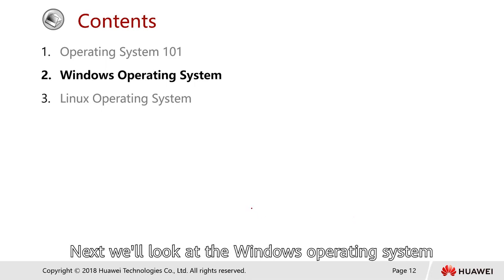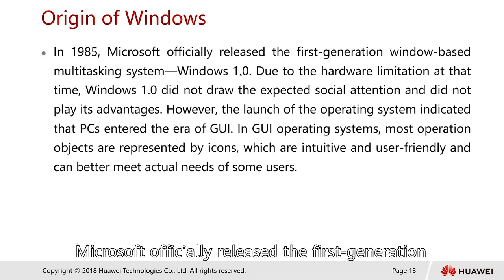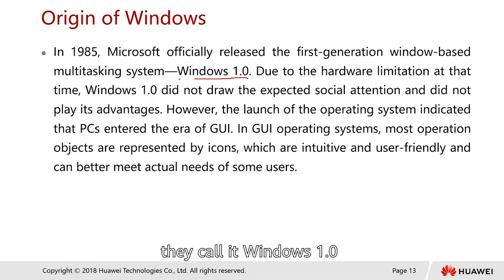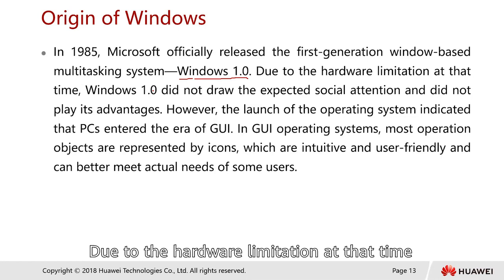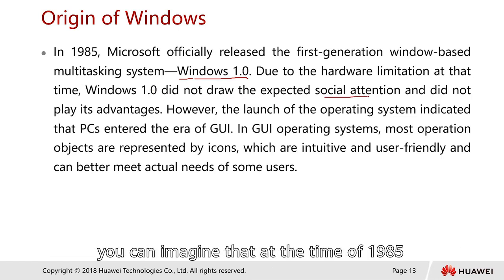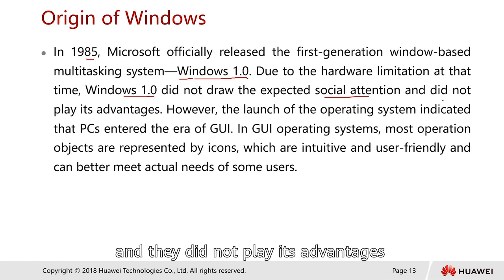Next we look at the Windows operating system. The origin of Windows: in 1985, Microsoft officially released the first generation of the Windows-based multitasking system, called Windows 1.0. Due to the hardware limitations at the time, Windows 1.0 did not draw the expected social attention. As we can imagine, in 1985 not many hardware was as powerful as today, and Windows 1.0 did not play its advantages.